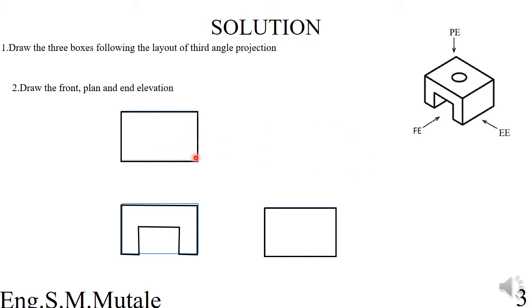Keep in mind that the plan view takes the plan dimensions, the end elevation takes the end elevation dimensions, and the front elevation takes the front elevation dimensions as usual.